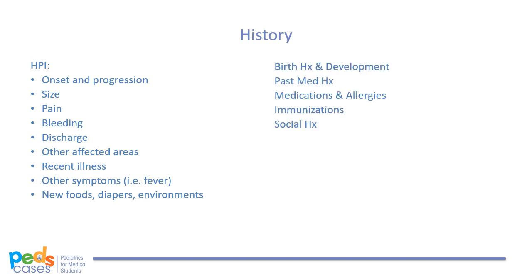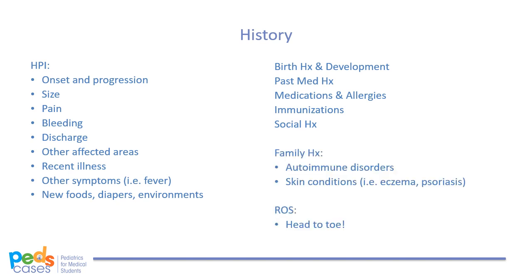You still need to take a complete pediatric history, but other things to highlight specific for the rash would be a family history, especially any autoimmune disorders and skin conditions such as eczema and psoriasis, and a review of systems from head to toe for any other symptoms you might have missed in the history of presenting illness.